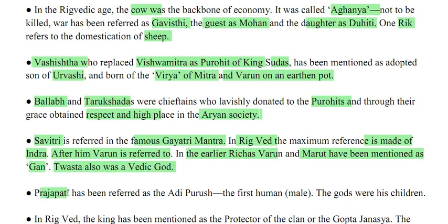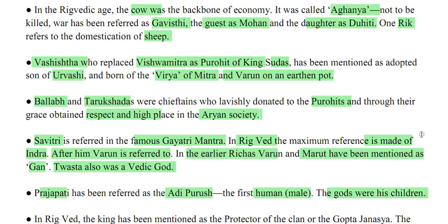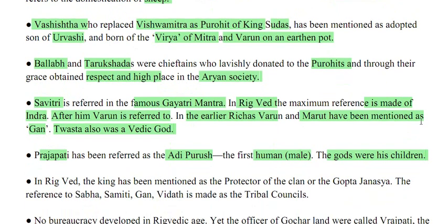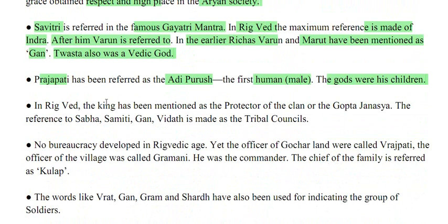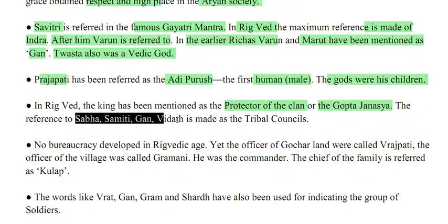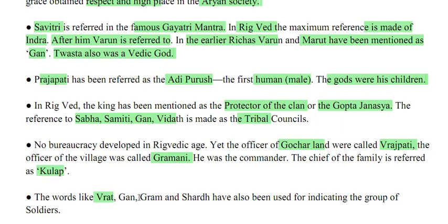Prajapati has been referred to as the Adipurus, the first human male — the gods were his children. In Rigveda, the king has been mentioned as the protector of the clan, or the Gopta Jansha. The reference to Sabha, Samiti, and Vidat is made as tribal councils. The officer of Gochar land was called Vrajapati, the village officer was called Gramini, and the chief of the family is referred to as Kullippa.